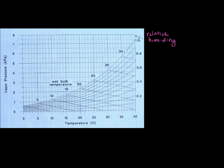The first important curve to point out is the 100% relative humidity line, and this curve is basically saturation. At this line, the air can no longer hold water vapor - this is the point at which it's saturated. So once you hit saturation, if you go above it, that's when you start having condensation. So beneath this line you can have water vapor; past this line that's when you start getting condensation.